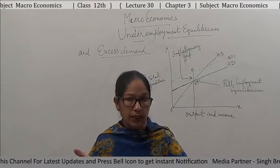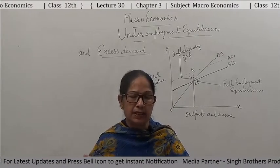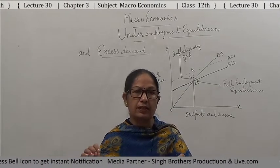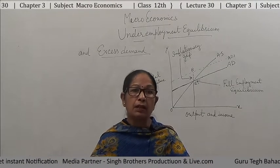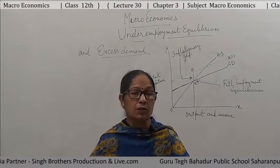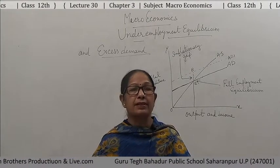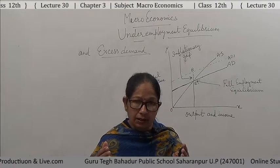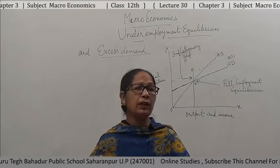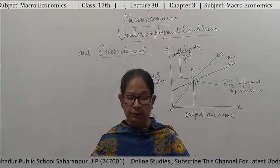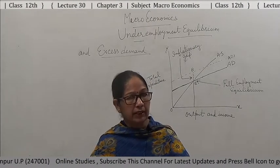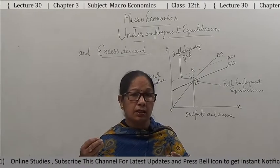Social unrest is another impact. When poor people become progressively poorer and their basic needs are not satisfied, social disturbance is created. Poor people resort to violence and crime because of lack of money. All crimes are created due to unemployment and poverty. When inflation occurs, poverty rises, and social unrest is the consequence.